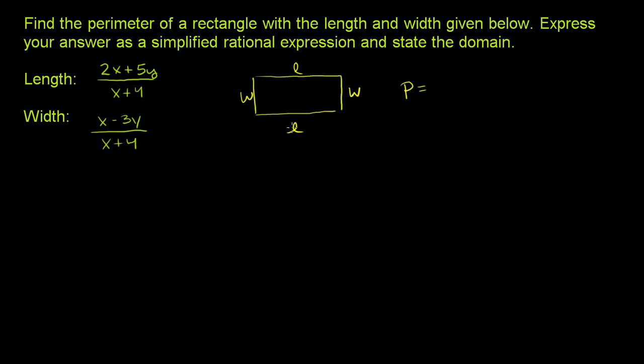Or the perimeter is going to be 2 times the length, because you have to add the length twice, 2 times the length plus 2 times the width, since you're adding the width twice. So let's just use this expression with these expressions right over here and then simplify it.